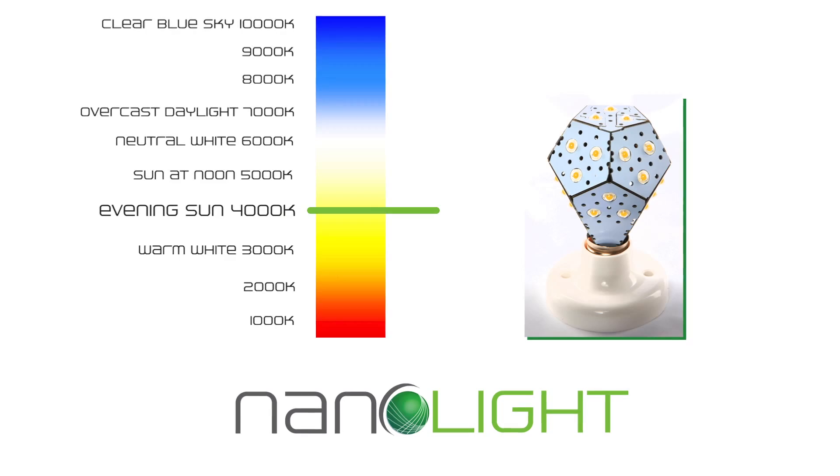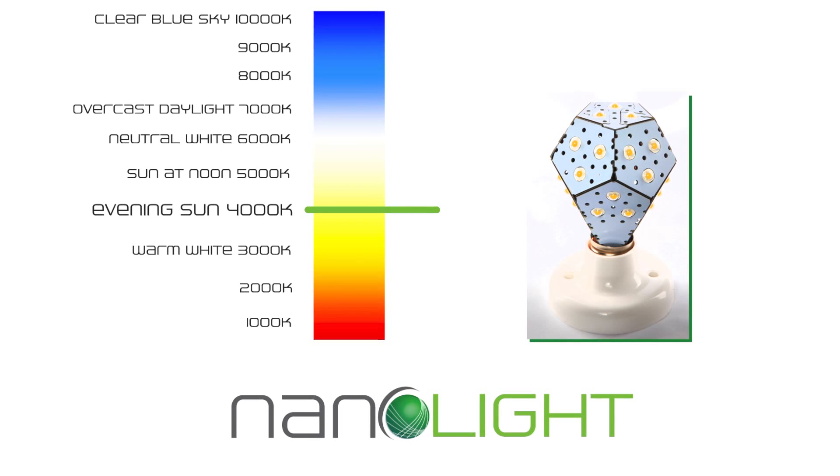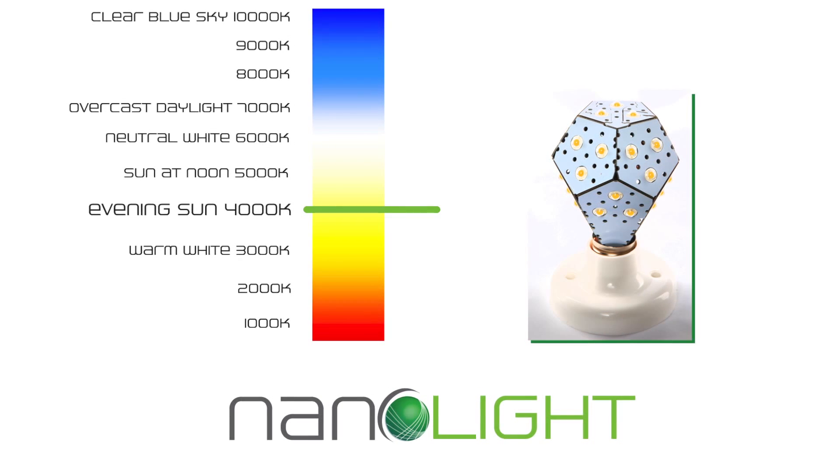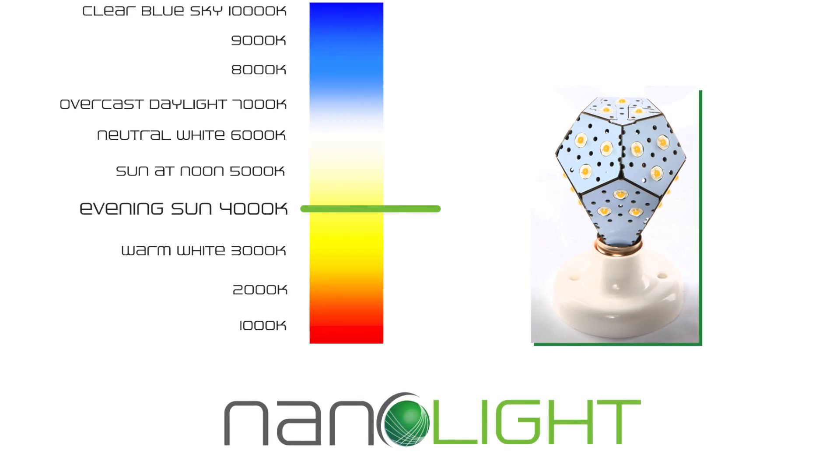We chose a color temperature that is the most versatile in your home and can be used in any room. The NanoLight produces a 4000K bright neutral white with a bit of warmth to make you feel comfortable like in the evening sun.